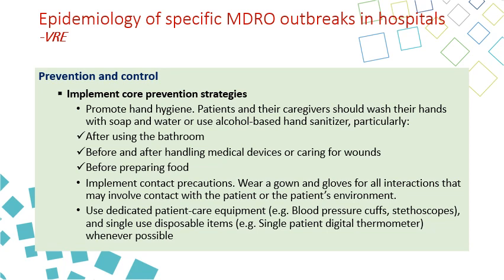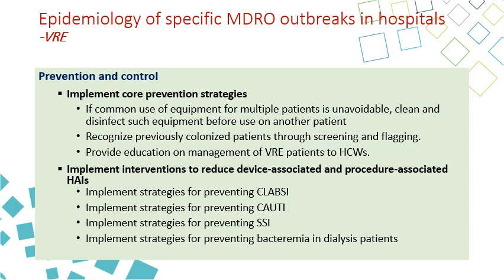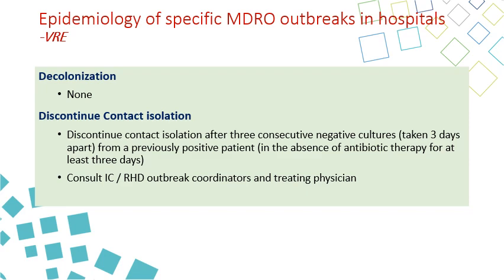Prevention of VRE is very similar to MRSA: promote hand hygiene, especially after using the bathroom — as it is an intestinal organism — and before and after handling medical devices or caring for wounds and before preparing food. Implement contact precautions and use dedicated patient care equipment or single-use disposable items. If common use items are unavoidable, clean and disinfect. Recognize and flag early VRE cases on the system, provide education for healthcare workers, and implement preventive measures for associated infections including CLABSI, CAUTI, SSI, bacteremia, and dialysis patients. There is no decolonization for VRE. Discontinue contact isolation after three consecutive negative cultures taken three days apart.